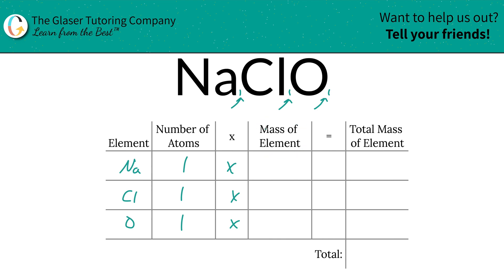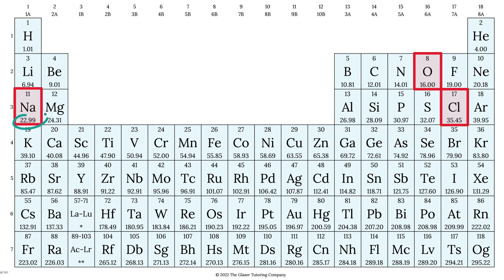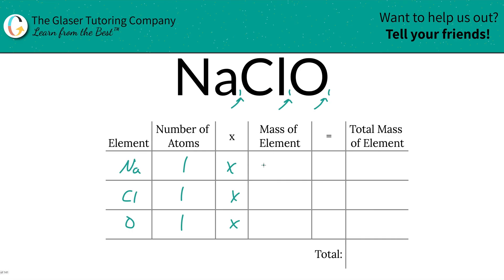Then we're going to multiply it by the mass of each particular element. That's where the periodic table comes into play. So sodium is 22.99, chlorine is 35.45, and oxygen is going to be 16. So here we've got 22.99 for sodium, 35.45 for chlorine, oxygen was 16.